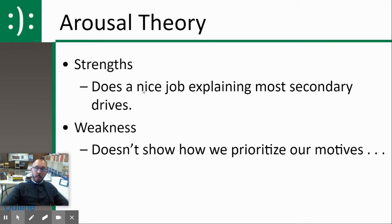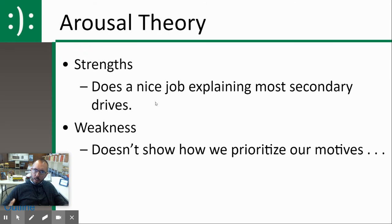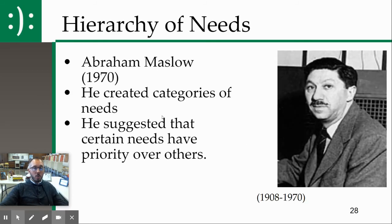The strength of arousal theory is it does a very nice job explaining most secondary drives — it explains why we seek out things because we want to be more or less interested, more or less aroused. The weakness is it doesn't show how we prioritize our motives, which leads us right into Maslow's hierarchy of needs.